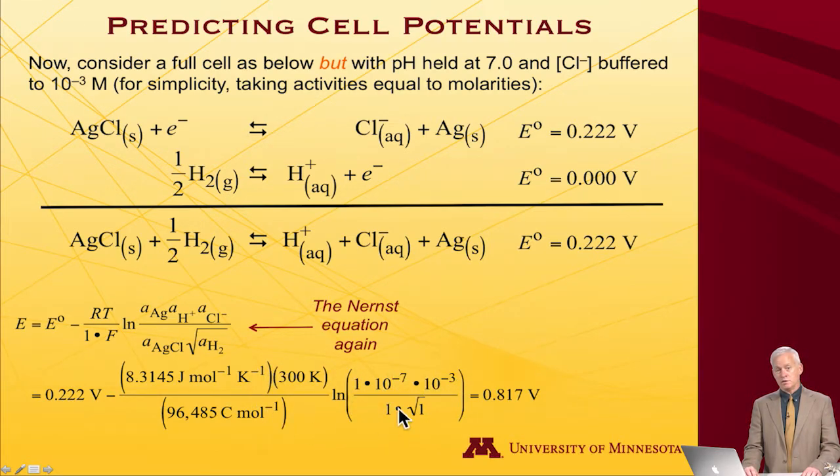This term is not zero. In fact, it corresponds to a relatively large negative number, which is preceded by a minus sign, so it contributes positively, so that this cell has an overall potential of 0.817 volts.